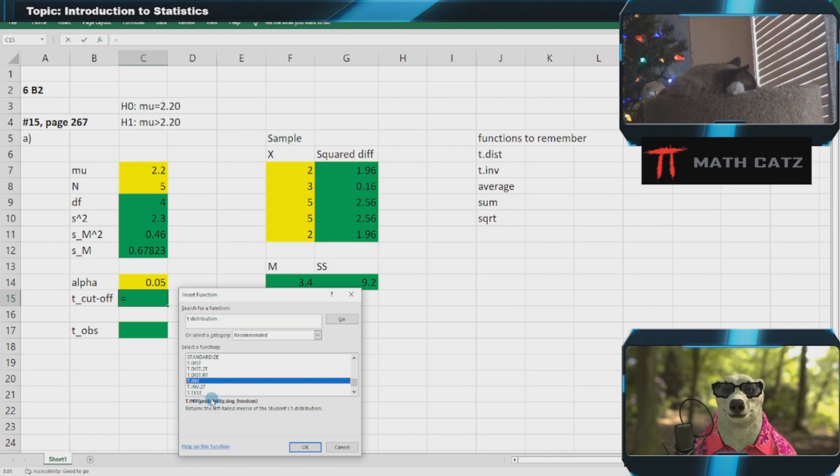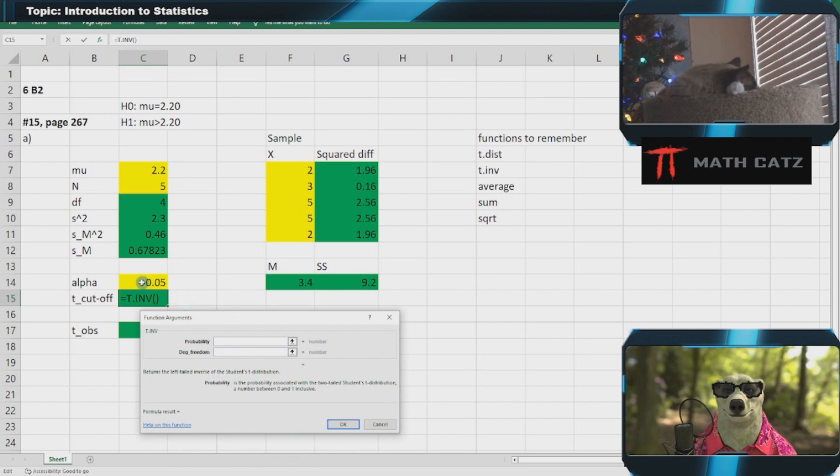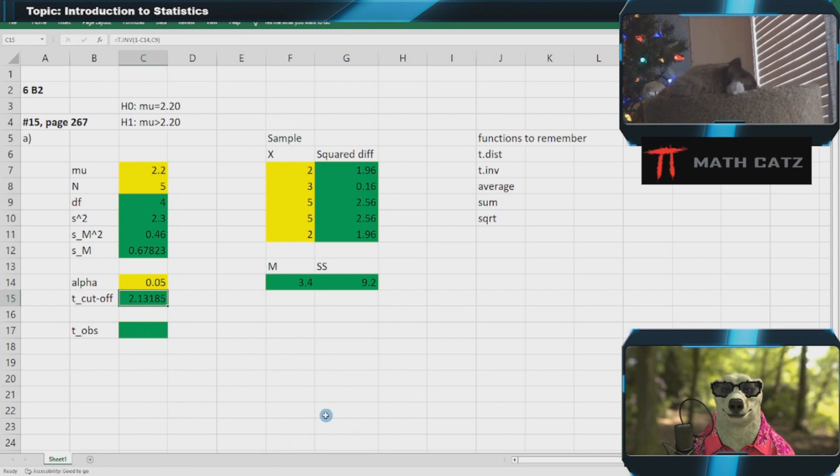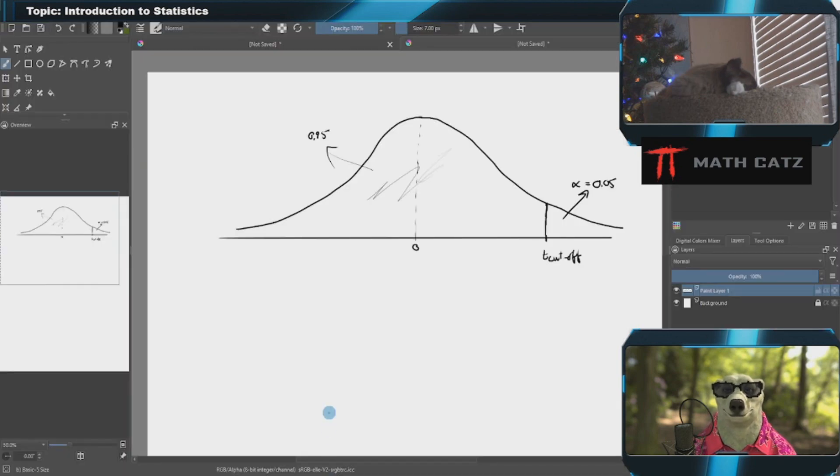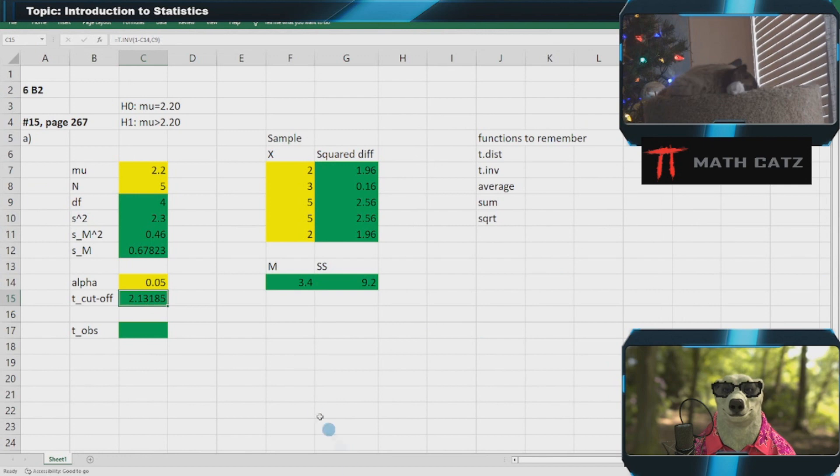We want the inverse of the t distribution. I have the probability, I want the t score. What's the probability? It's the left side, and I have a one-tailed test on the right, so I have to say 1 minus alpha. My degrees of freedom is 4. Our cutoff t score is 2.13185.